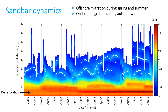Sandbar crest has been identified for each survey and depicted as white dots on this time-stack of beach profile elevation. Offshore sandbar migration is observed during spring and summer months, whereas onshore migration happens during storm season in autumn and winter months. The sandbar approaches the shore, and sandbar welding occurs sometime between January and April of each year, increasing nearshore sand volume.